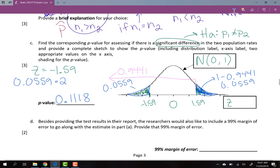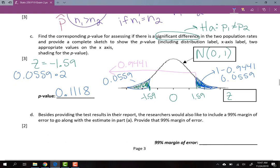Then I turn to part D. Part D says the researchers would also like to include a 99% margin of error. Provide that 99% margin of error. Remember, the margin of error, if I think of the formula for a confidence interval, which is p1 hat minus p2 hat plus or minus, everything to the right of the plus or minus is that margin of error. So that's what I would like to find here, just that piece.